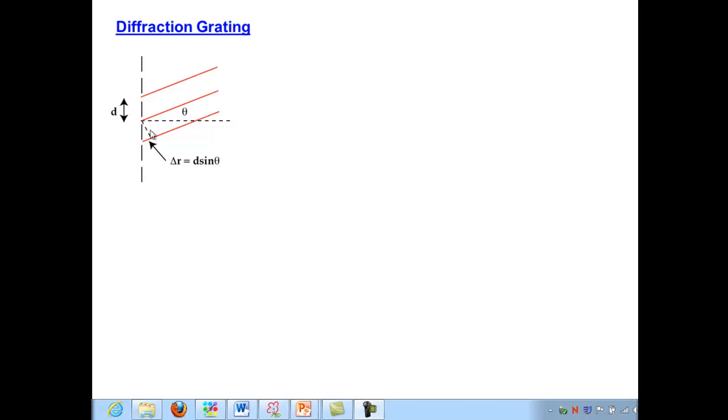So every slit has a partner adjacent to it, and the path difference for the light that travels through those two slits is exactly the same as it is for just two slits alone.